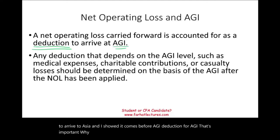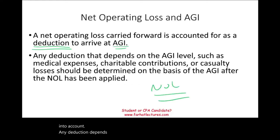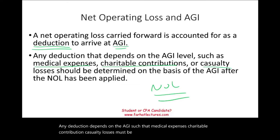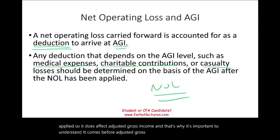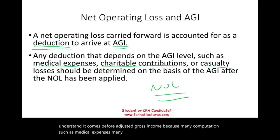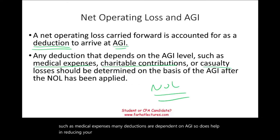Why is that important? Because you have to take NOL into account before calculating deductions that depend on AGI — such as medical expenses, charitable contributions, and casualty losses. All of those must be determined on the basis that NOL has already been applied. That's why it's important to understand it comes before adjusted gross income, since many deductions are dependent on AGI. It does help in reducing your taxable income by reducing your AGI.